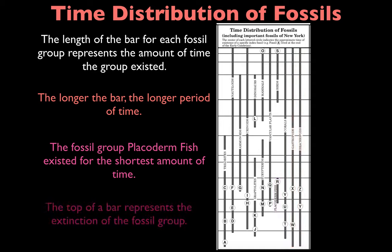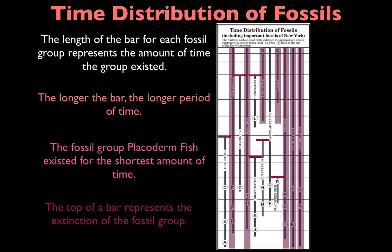We can also get information about when a specific fossil group went extinct. The top of a bar represents the extinction of fossil groups. When the top of the bar does not reach present day, that tells us the group is extinct. Trilobites, ammonoids, dinosaurs, graptolites, eurypterids, and Placoderm fish have all gone extinct. All the other fossil groups highlighted in purple are still in existence today because their fossil group bar extends to present day.